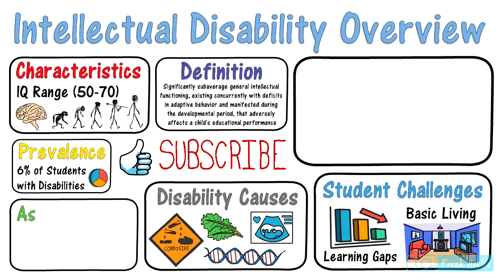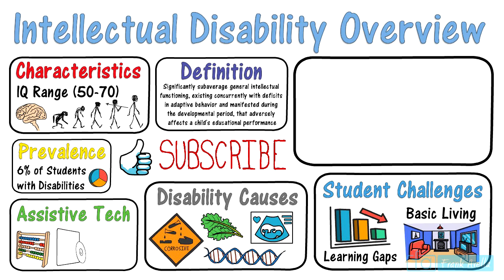We'll take a look at some types of assistive technology for these children. They will benefit from using manipulatives in the classroom to help bridge instruction from concrete to abstract. There are different types of software to help with various academic subjects and modified lessons. With respect to math, provide these children with calculators and teach them how to use them. Lastly, a one-to-one paraprofessional may be the biggest help.